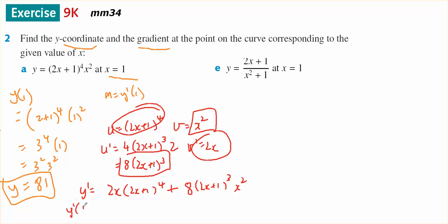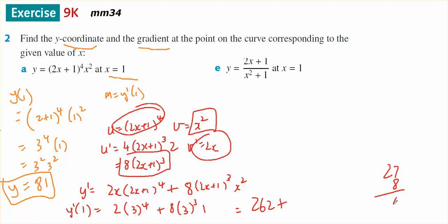And y dash of 1 will be 2 times 3 to the power of 4, plus 8 times 3 to the power of 3 times 1, which is 2 times 81, giving 162, plus 8 times 27. 8 times 7 is 56, carry 5; 8 times 2 is 16, giving 216. So 162 plus 216 equals 378 — wait, 478 is what the gradient equals when x equals 1.